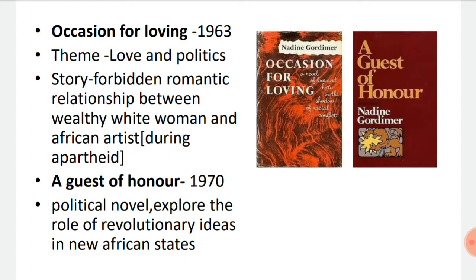Next we have 'Occasion for Loving,' published in the year 1963. The theme of this novel is based on love and politics — the story talks about a forbidden romantic relationship between a wealthy white woman and an African artist during apartheid. Next, 'A Guest of Honor,' published in 1970, is a political novel that explores the role of revolutionary ideas in new African states.